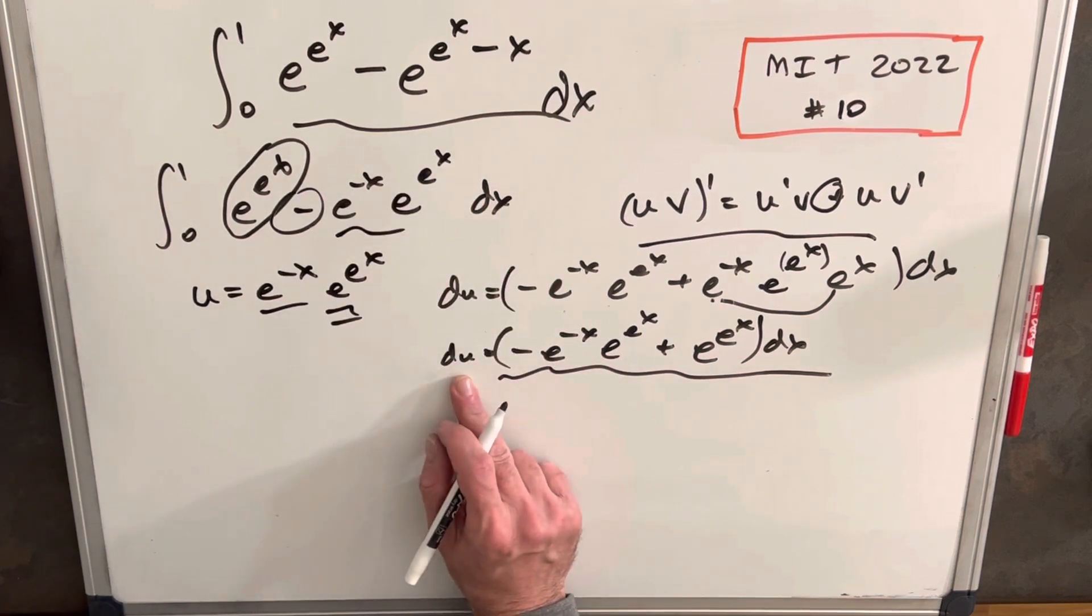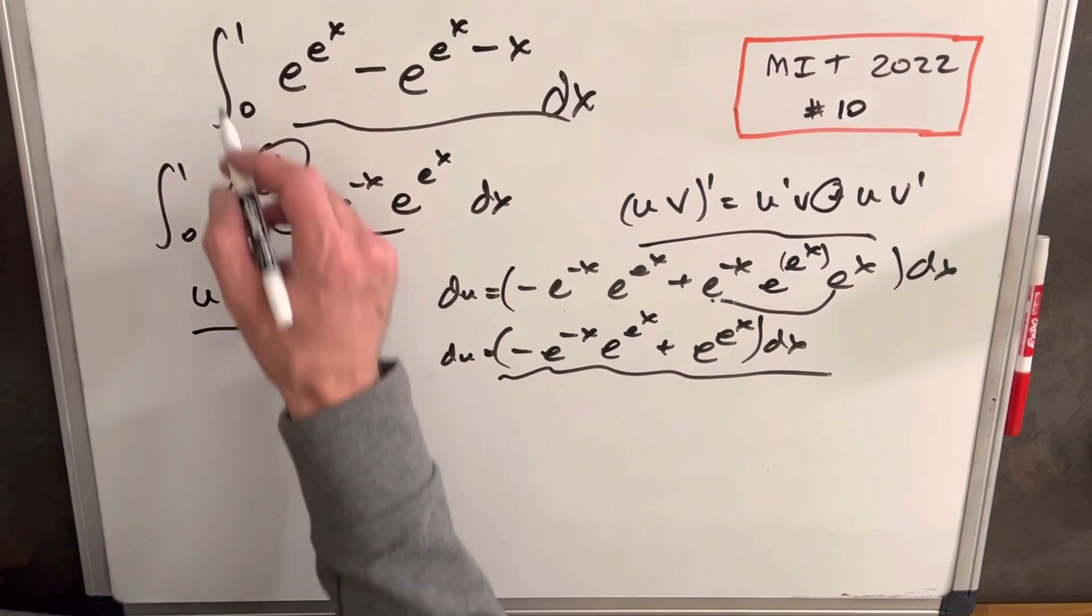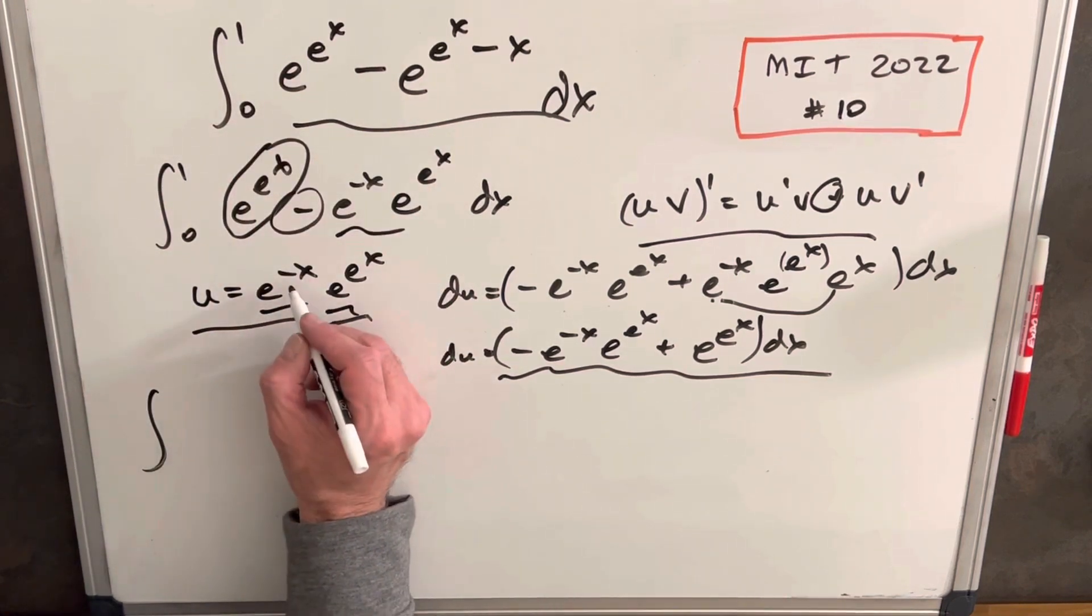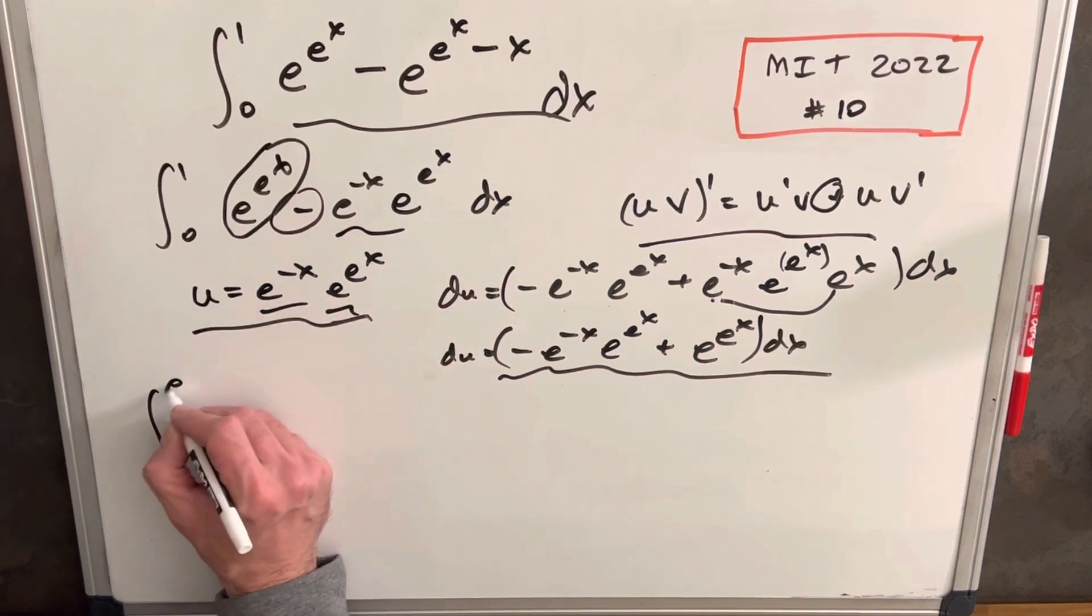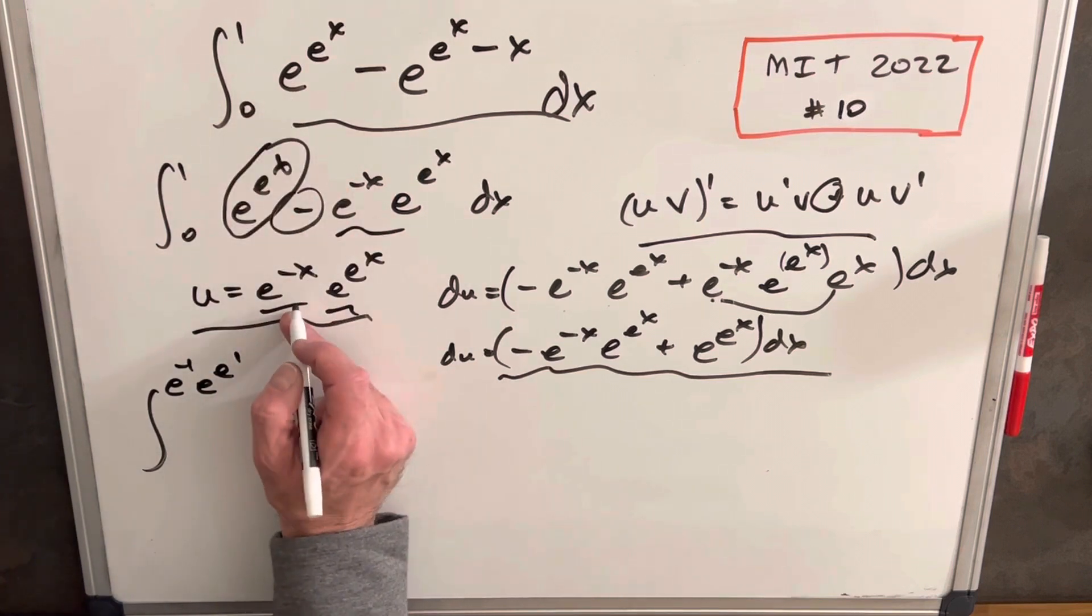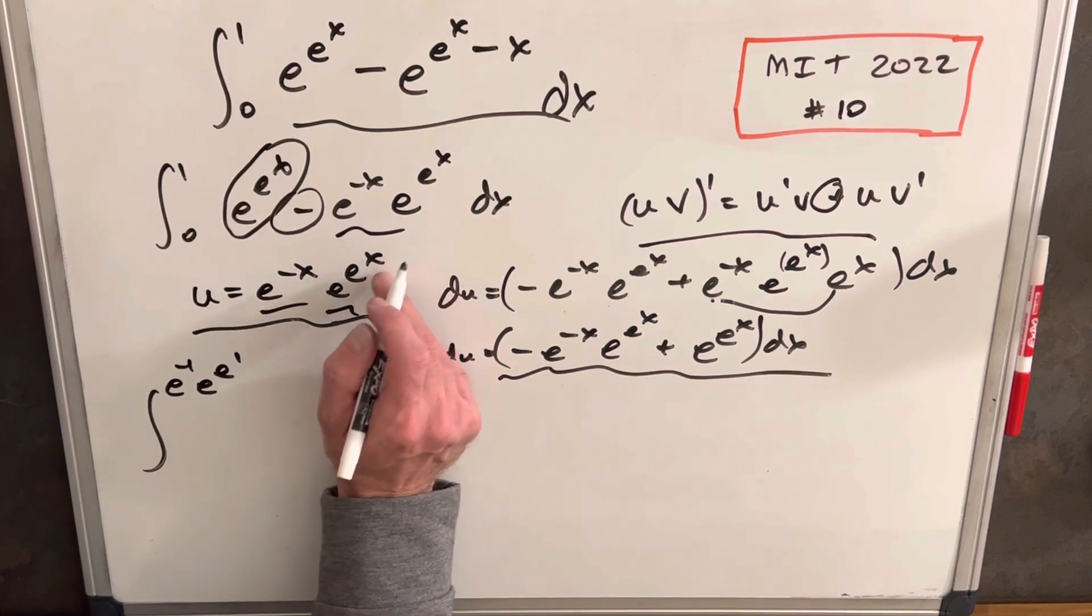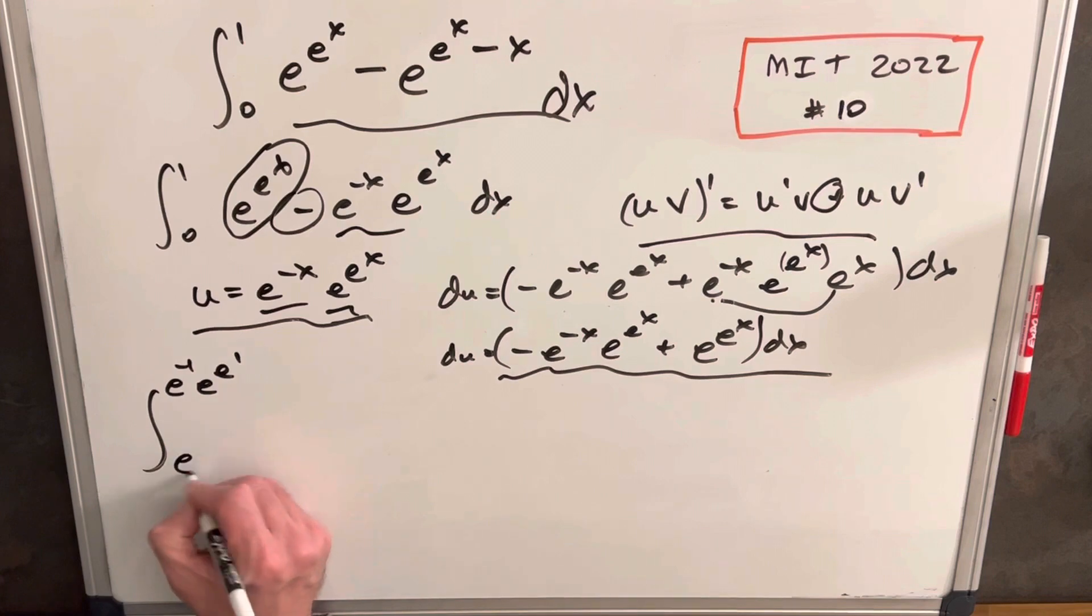So if this is our du, then our answer to the integral is just u. Let's write it out. First, let's change our limits of integration. We plug 1 in here and get e^(-1). This is e^(-1) times e^(e^1). When we plug 0 in, e^0 is 1, and e^(e^0) is just e.